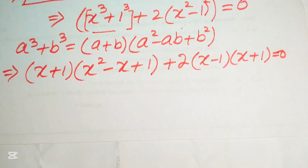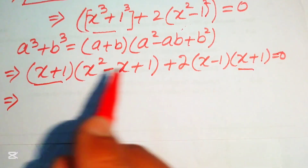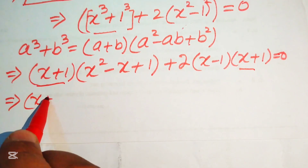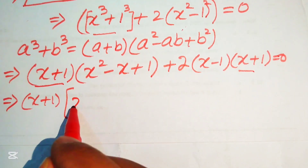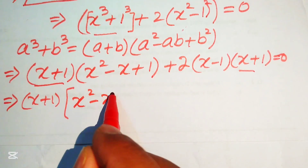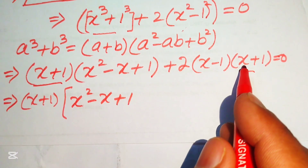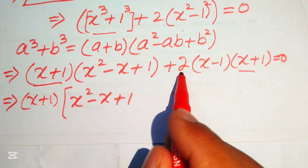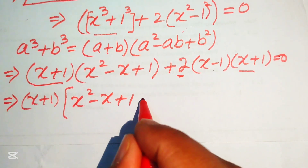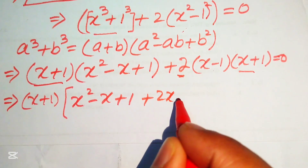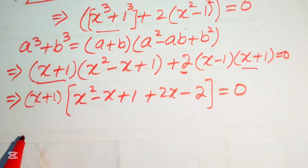We see that (x + 1) is the common term, so we factor it out. Taking (x + 1) common, the remaining terms are (x² - x + 1) and 2(x - 1), giving (x + 1)[x² - x + 1 + 2x - 2] = 0.